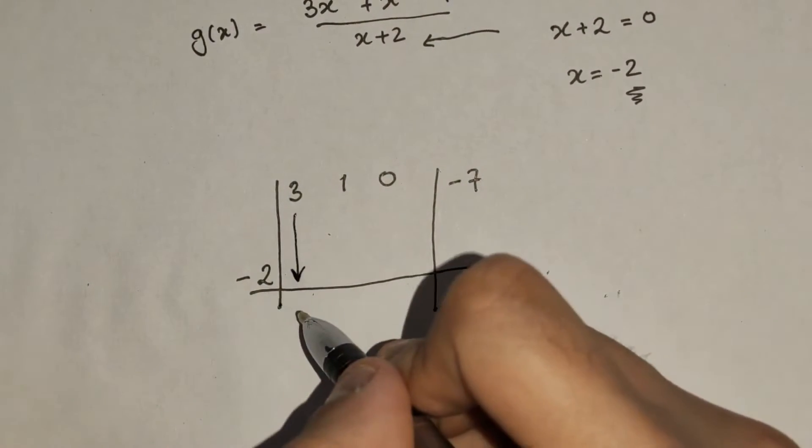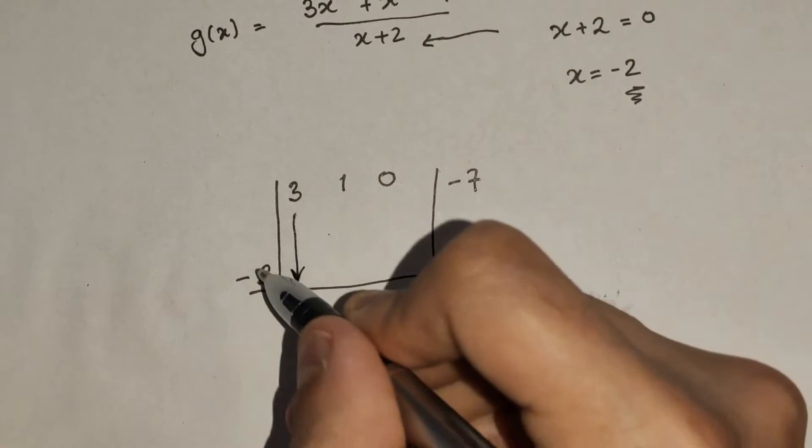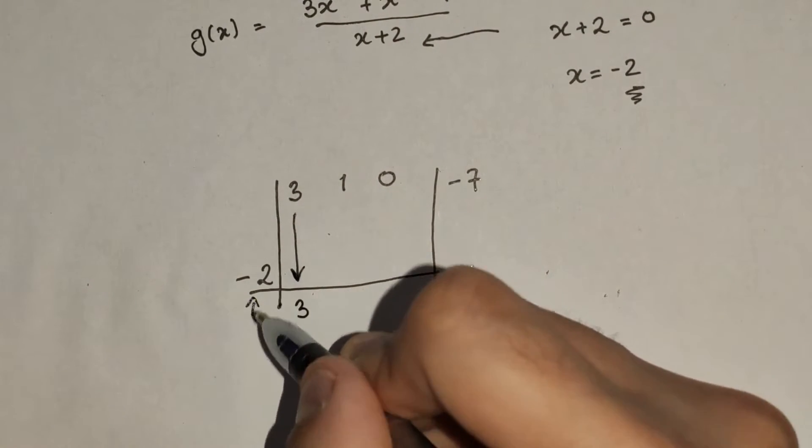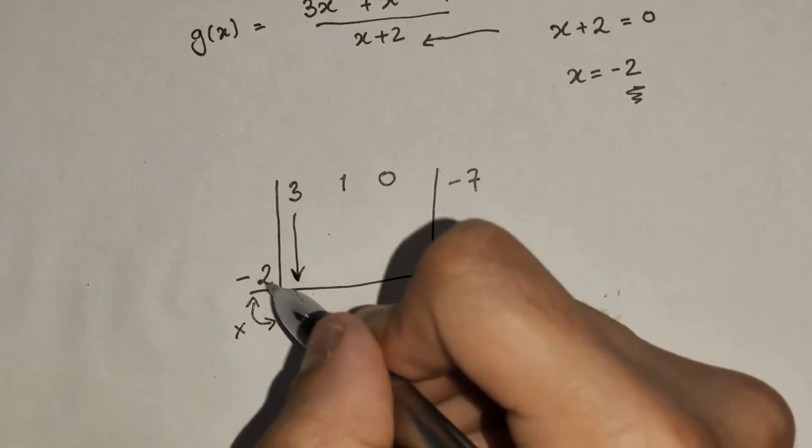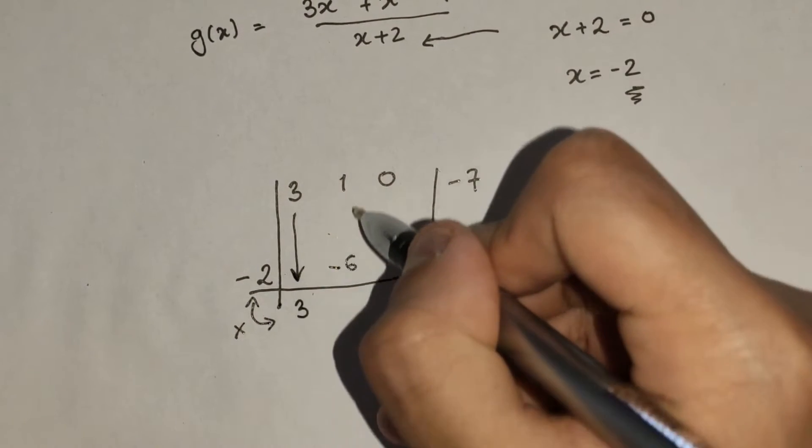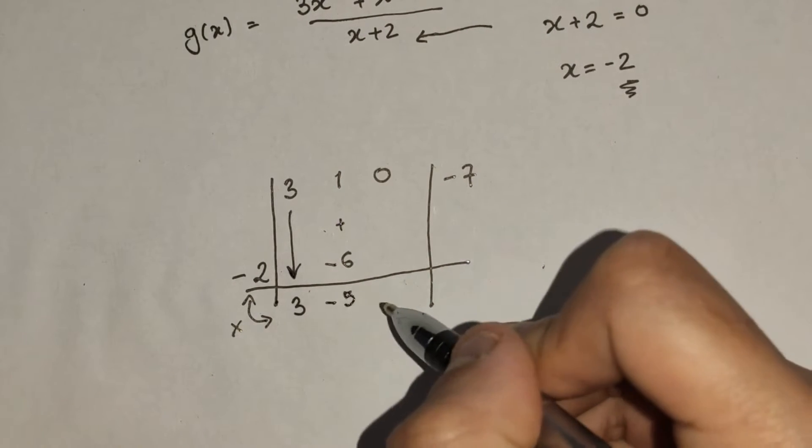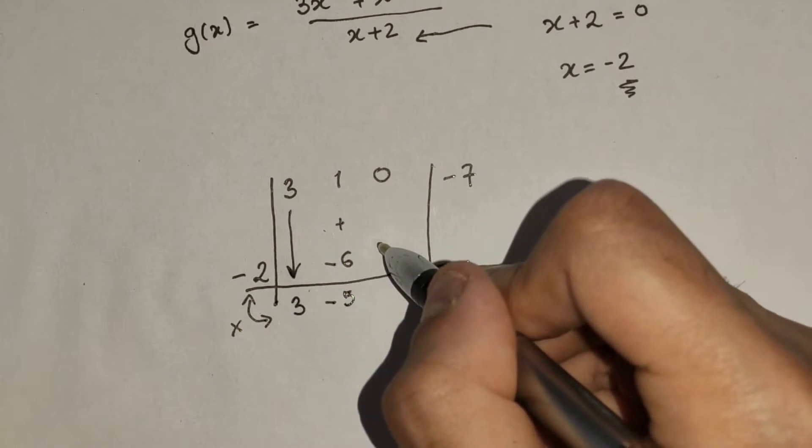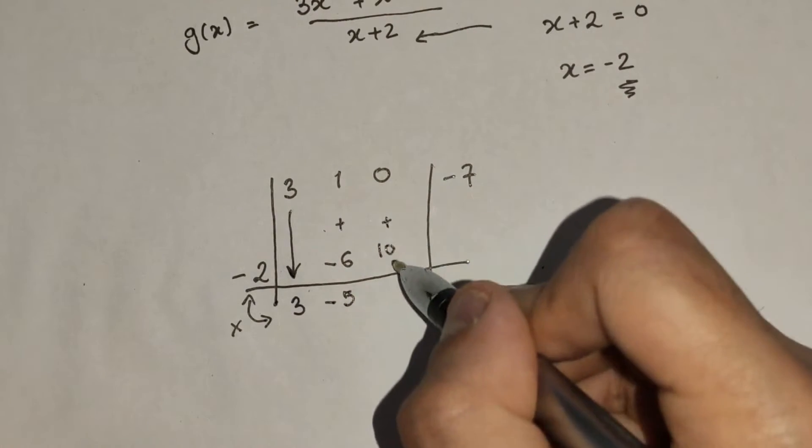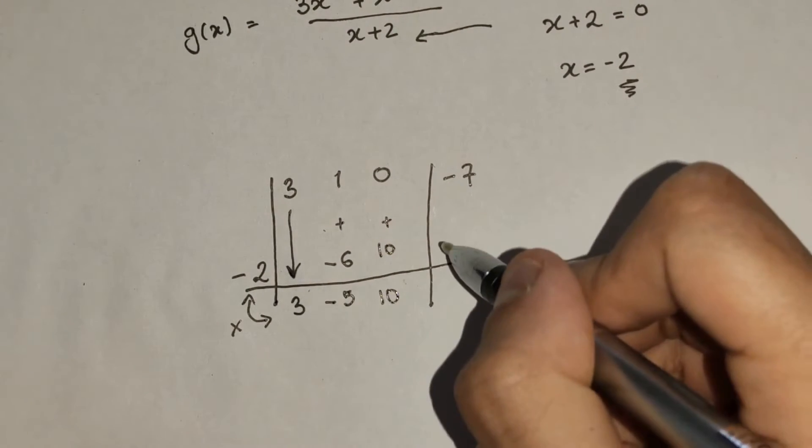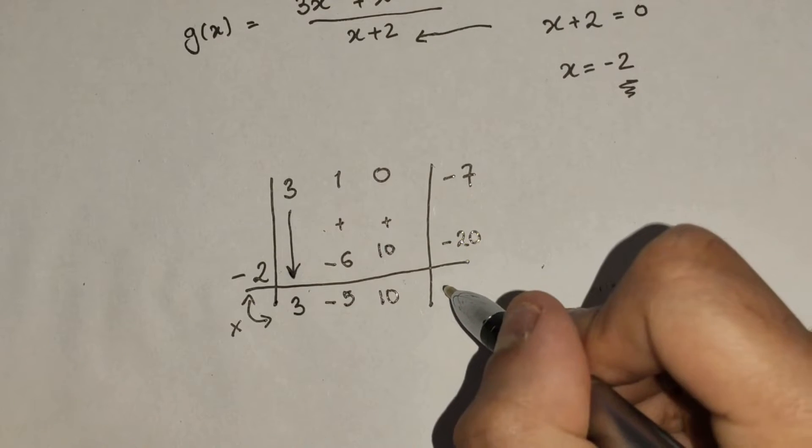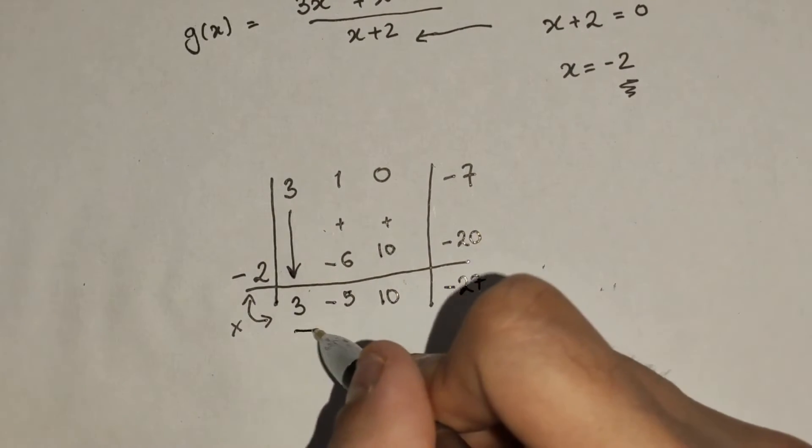Now, we put down the first number, which is 3. We multiply these two numbers, giving us minus 6. I then add these two numbers here, I get minus 5, multiply them together, I get 10, add them together, multiply them together, and we get these coefficients here.